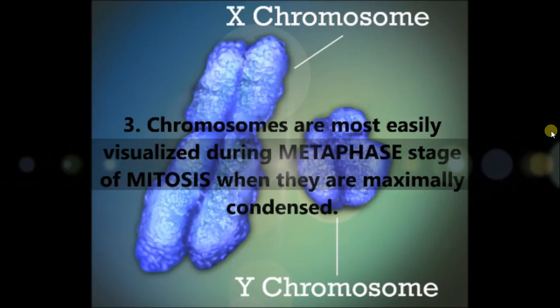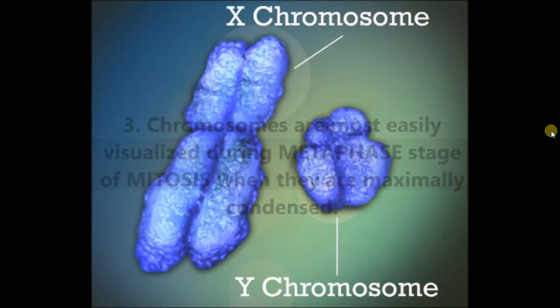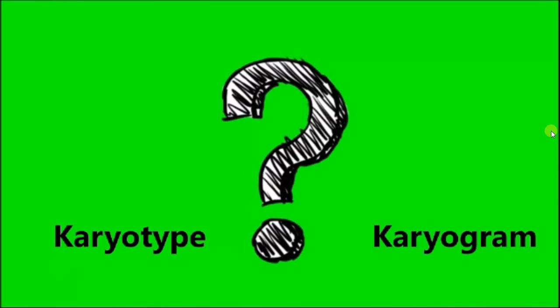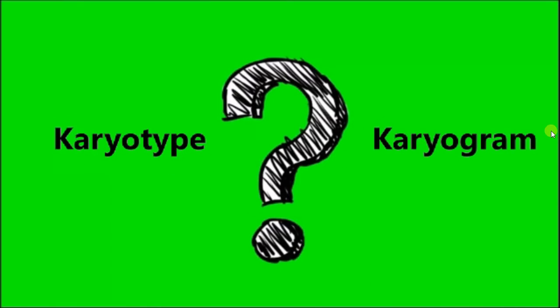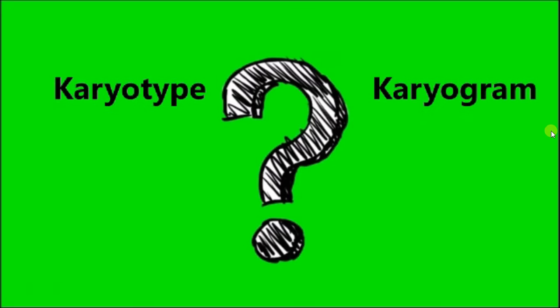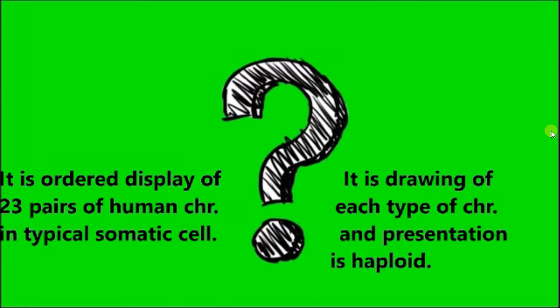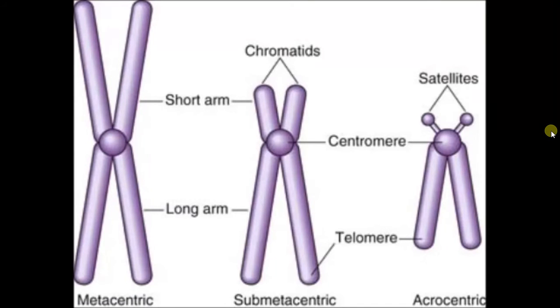What is the difference between karyotype and karyogram? A karyotype is the ordered display of 23 pairs of human chromosomes in a typical somatic cell, whereas a karyogram is the drawing of each type of chromosome and its presentation is haploid.